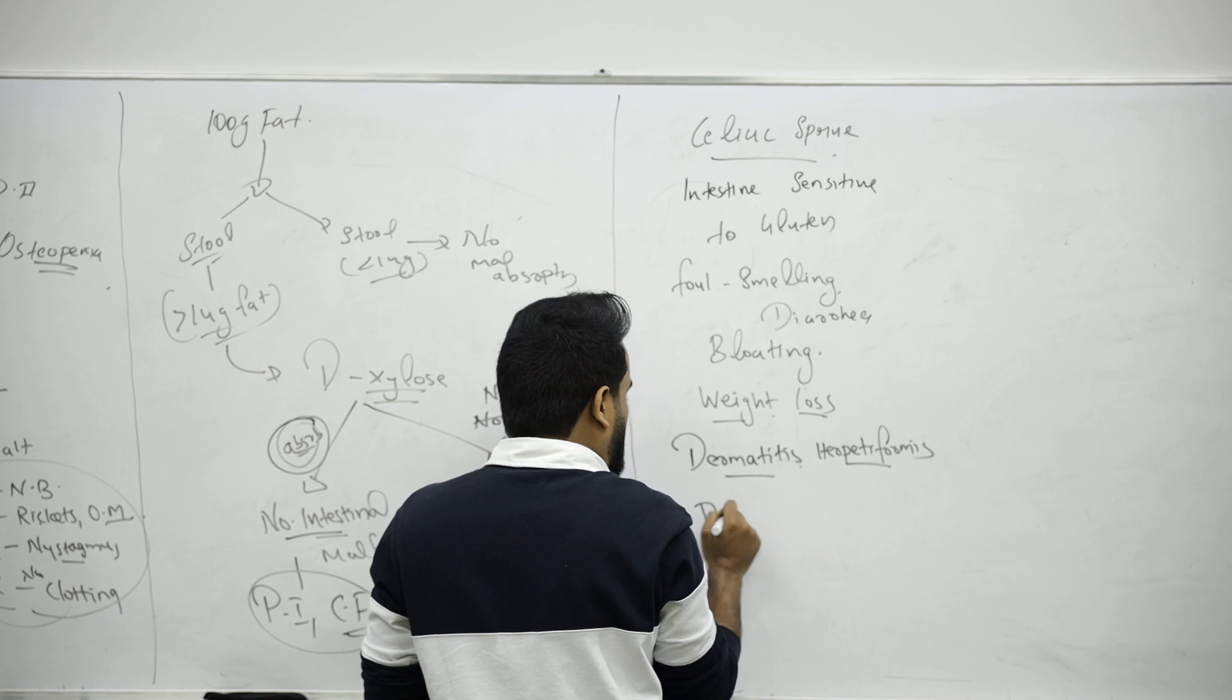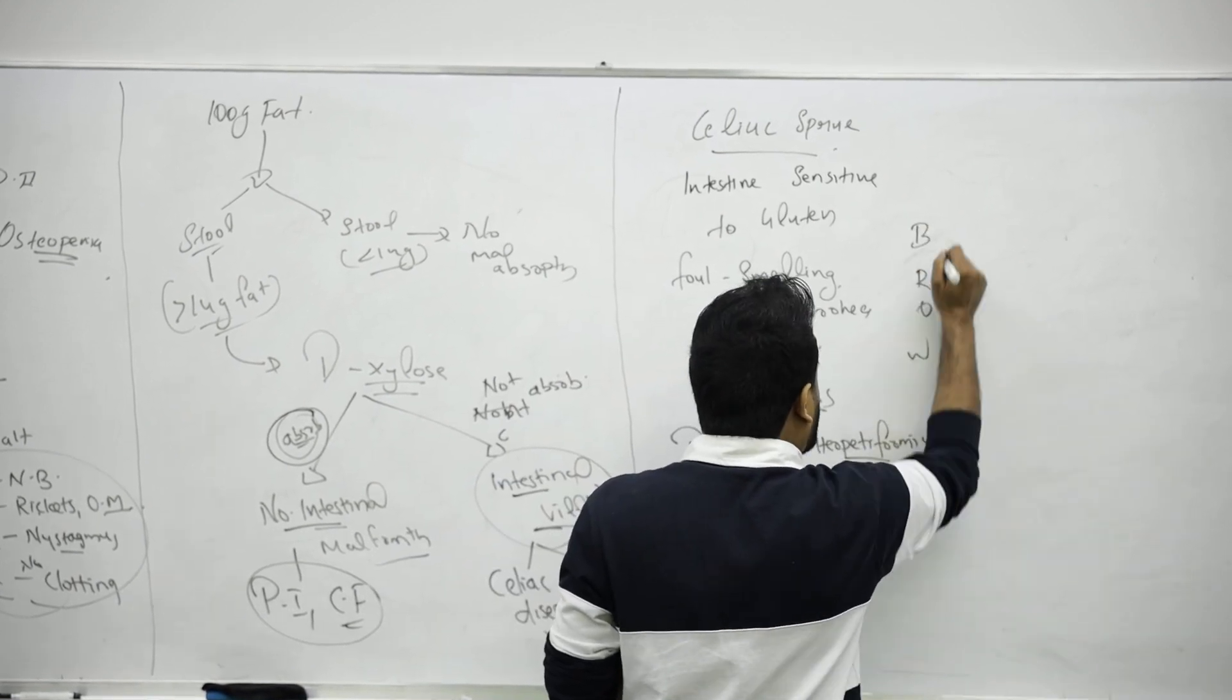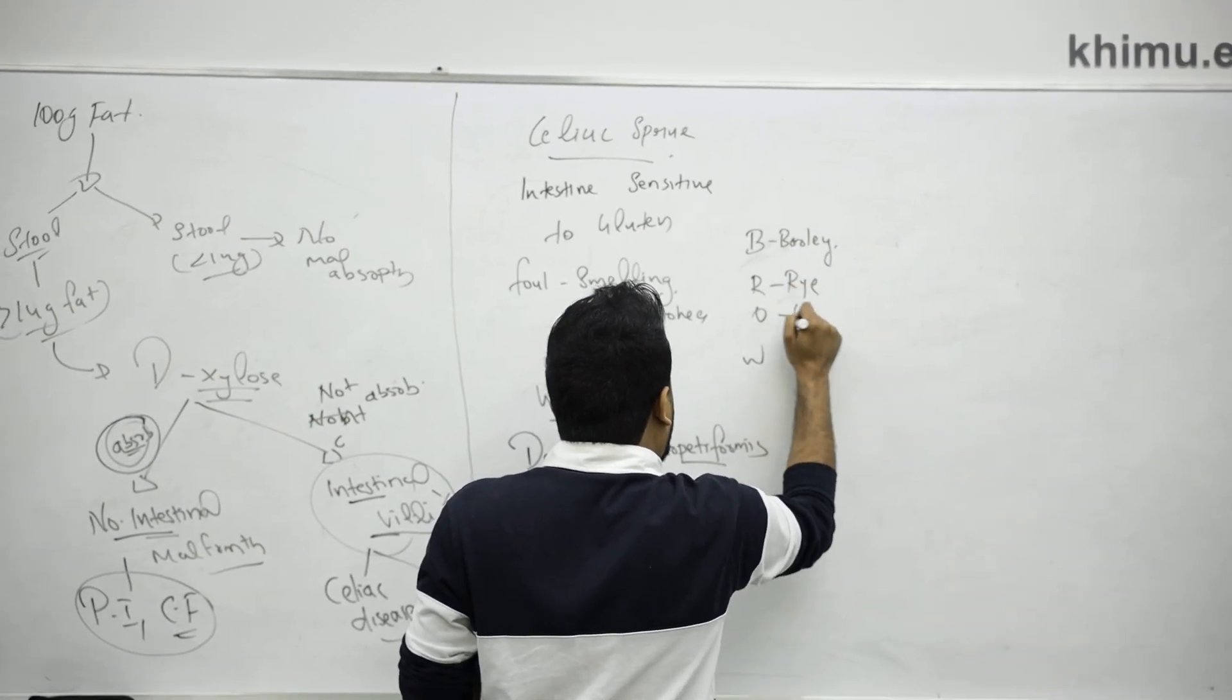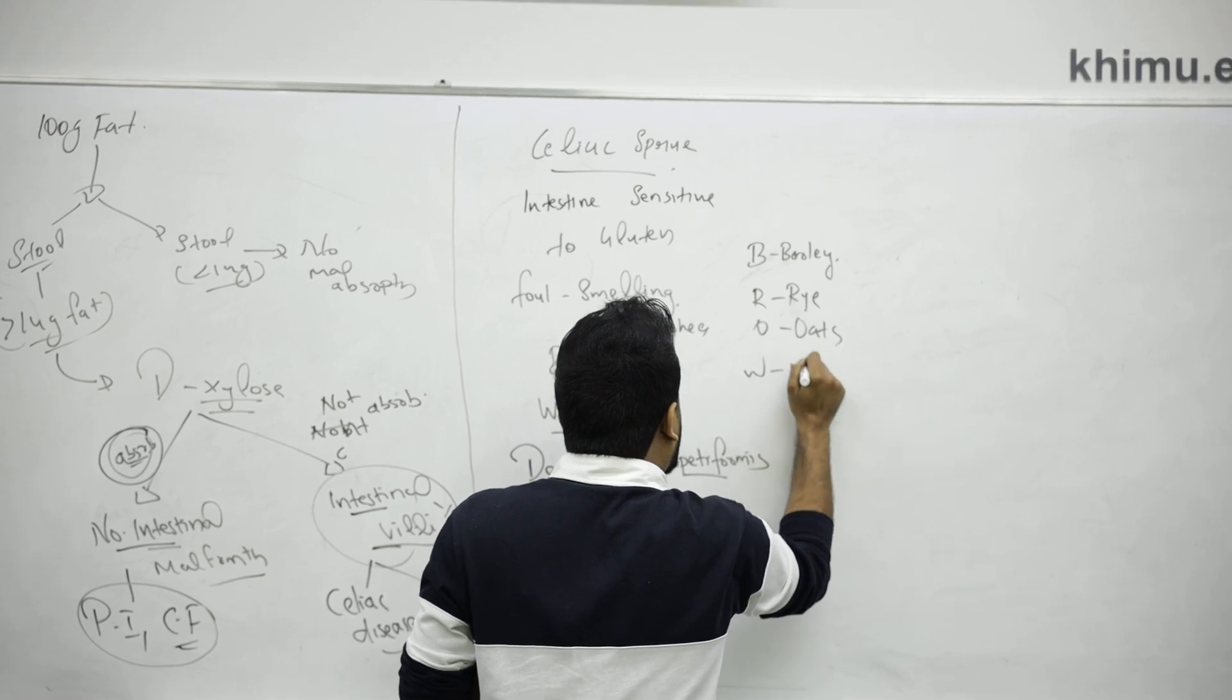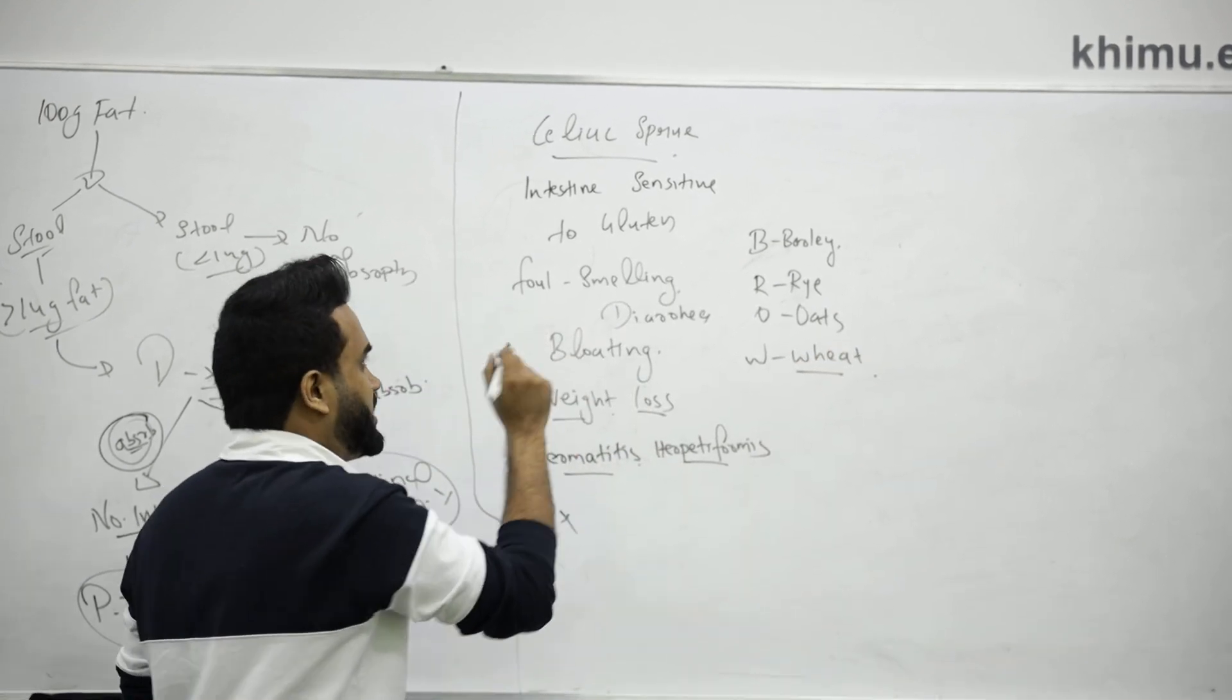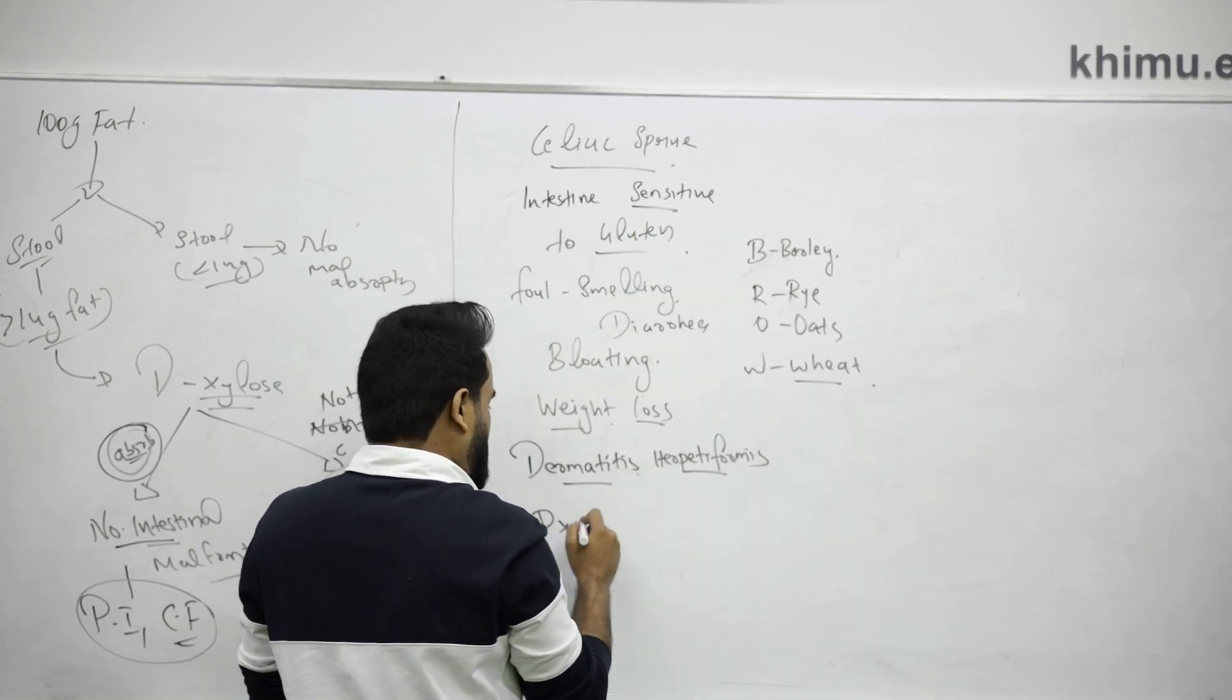For diagnosing, remember which are the gluten foods. Don't give the baby or child who is having celiac: barley, rye, oats, wheat, or semolina. Don't give because they are sensitive to gluten.